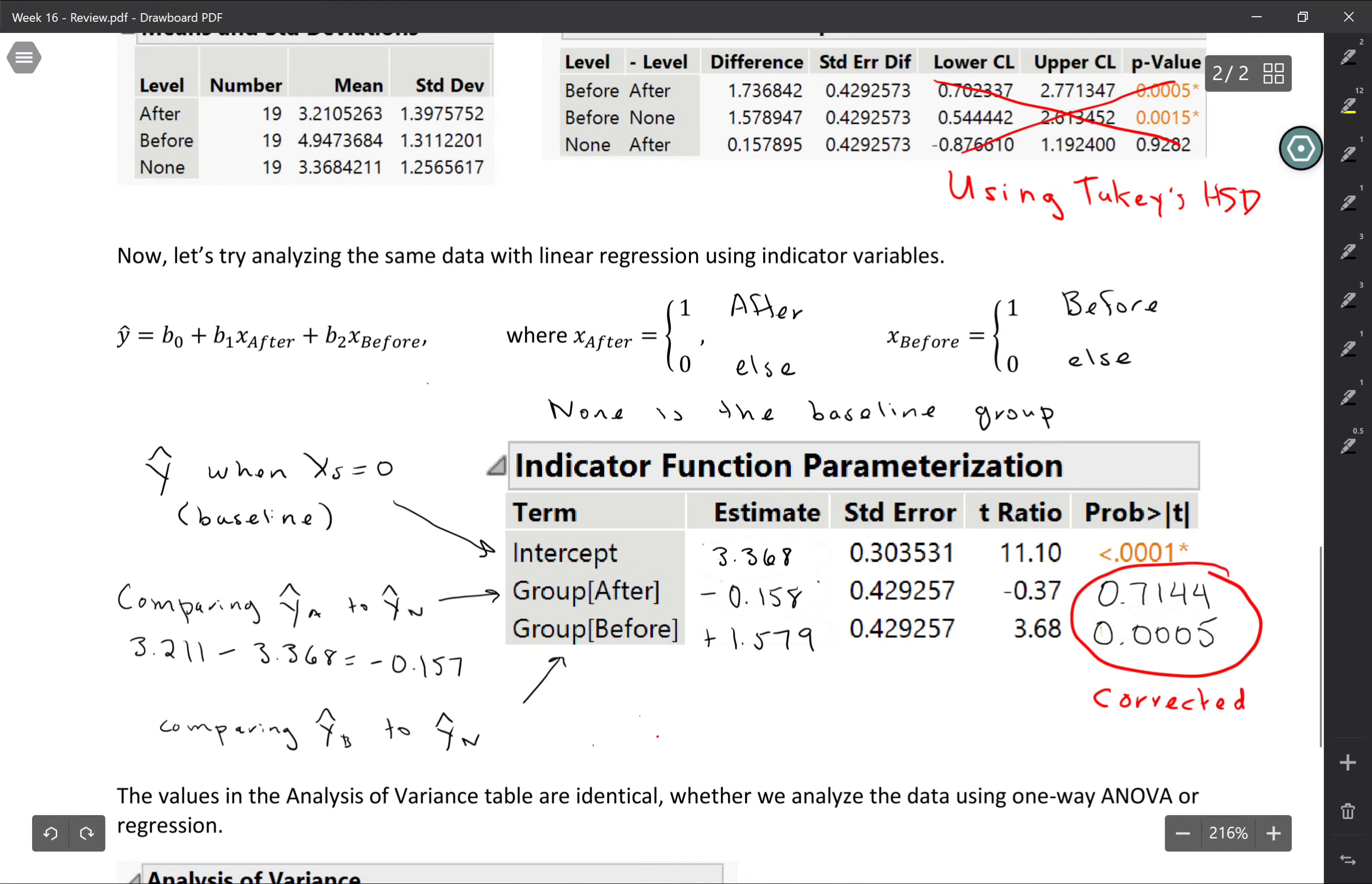Sorry for the mistake with the output. I had originally used Tukey's HSD instead of t-test, which is why the p-values weren't consistent with what's in the regression table. So just take a second, make sure that you have the correct p-values in your notes.